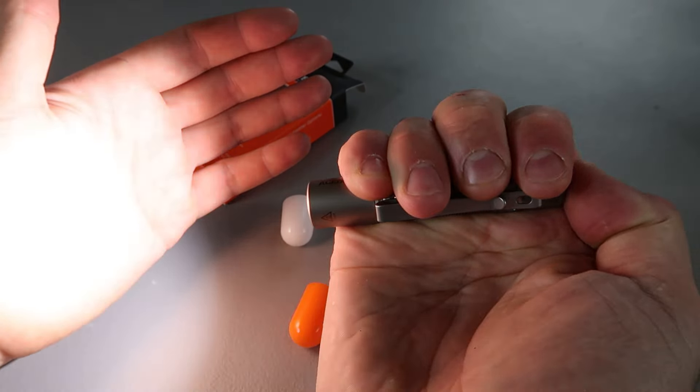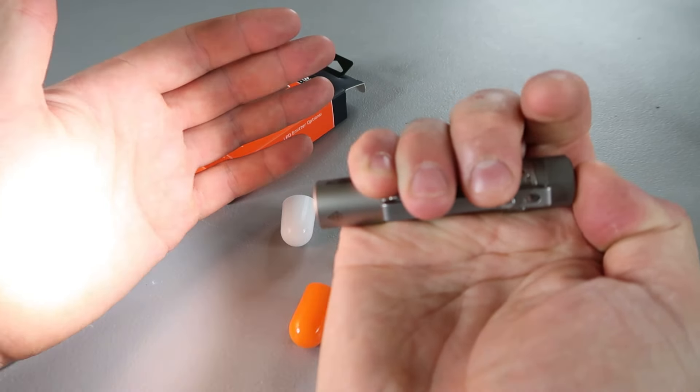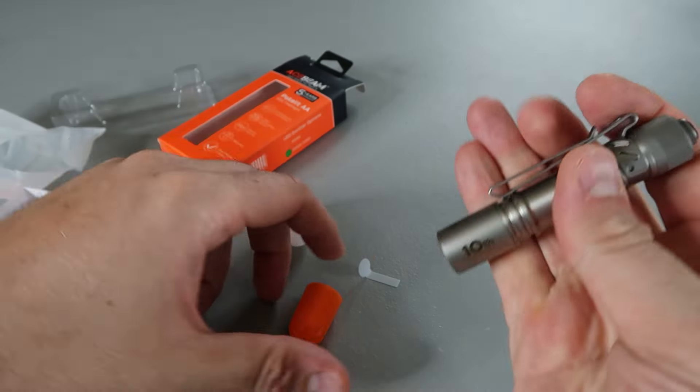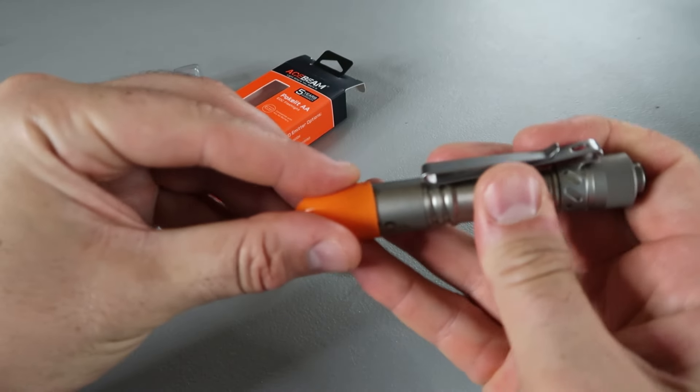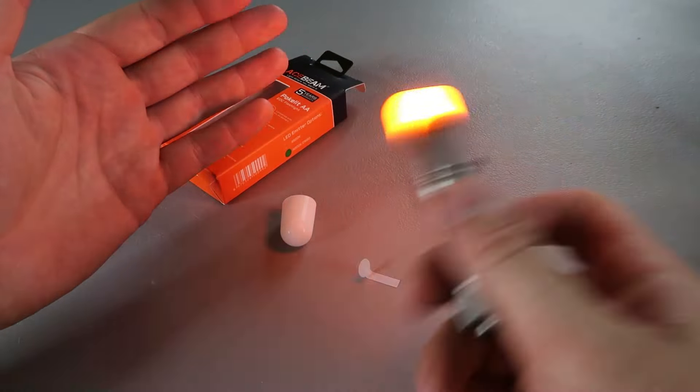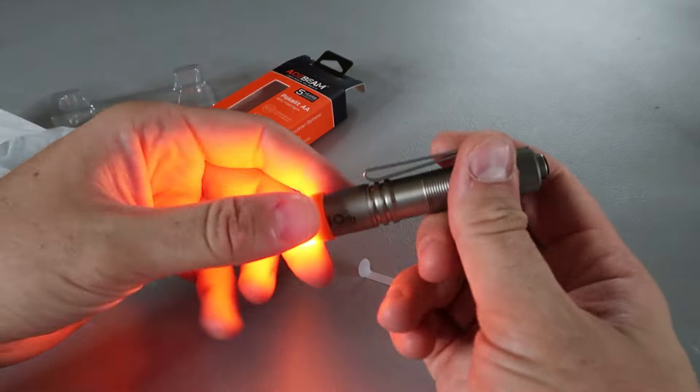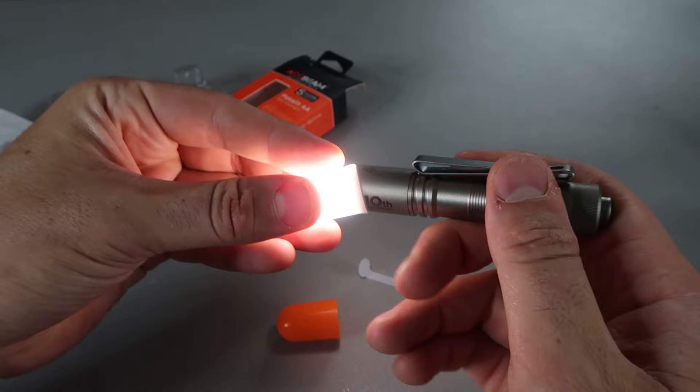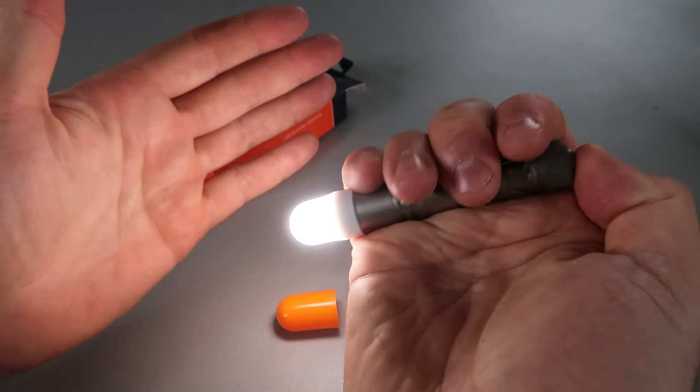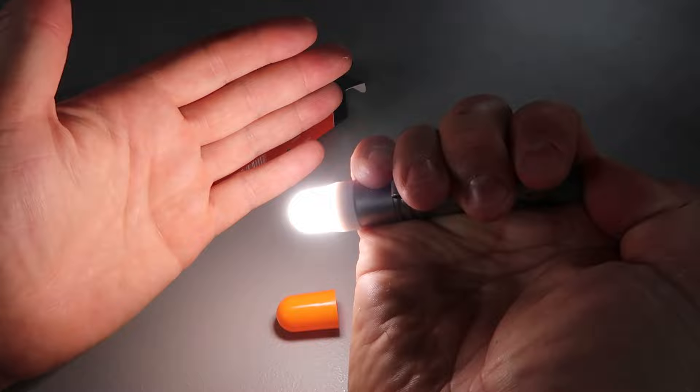Very easy way to change modes. There are strobe modes. If you put it in like we have right here, for the car maybe to get somebody's attention, or if you want to walk around with a lantern, there's a little attachment right here. Oh, that's even brighter.